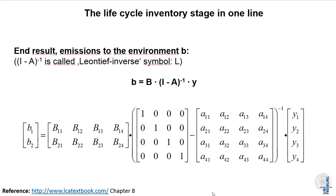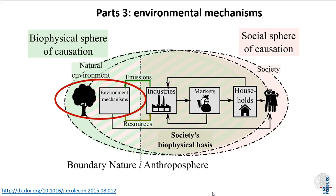So this is how far we have come: starting from the reference flow Y, we multiply from the left by (I − A)⁻¹ to construct the entire product system and supply chain to get total output X, and then multiply by the emissions coefficients B to get the emissions of the product system. This is the life cycle inventory stage of LCA expressed in one line. For a further reference on this type of math, please see chapter 8 of the LCA textbook linked on this slide.